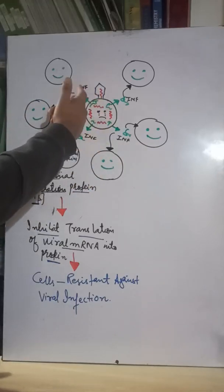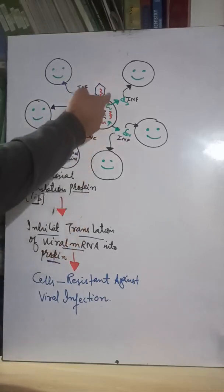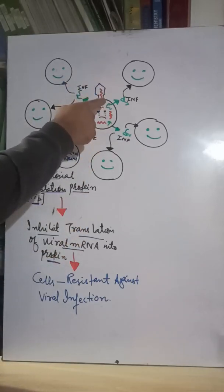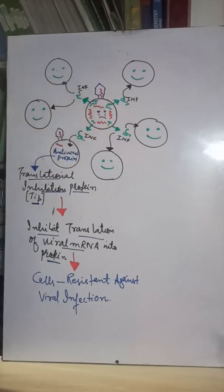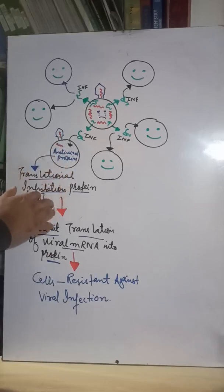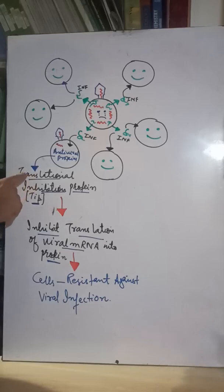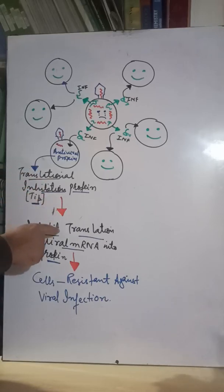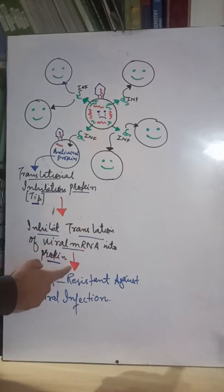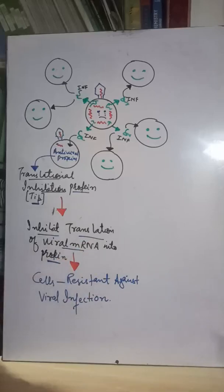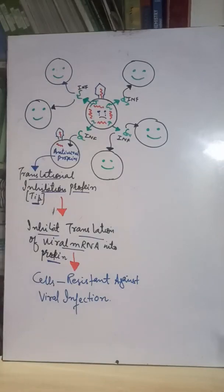These translational inhibiting proteins are formed by the cell in response to interferons, which came from the virus-infected cell. That cell sacrifices itself but releases interferons so that neighboring normal cells become aware of the virus and protect themselves. As a result, the cells become resistant against viral infection. This was about interferons. Now let us see what natural killer cells are all about.